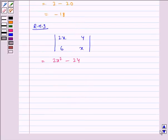Now we have equating LHS equals RHS, so we get 2x squared minus 24 equals minus 18.